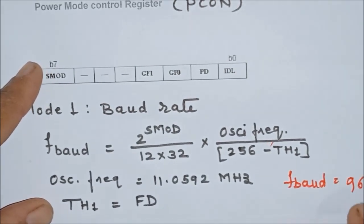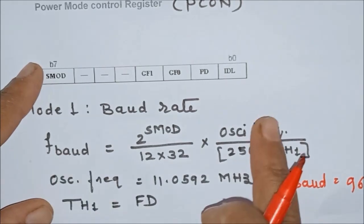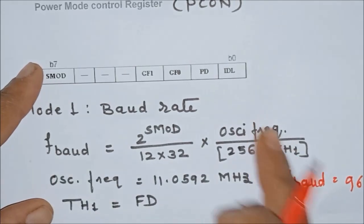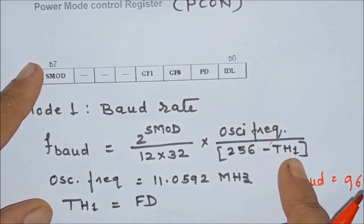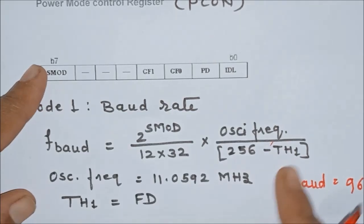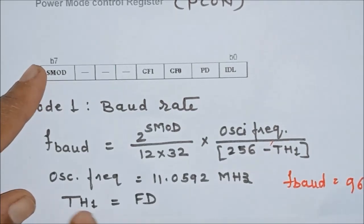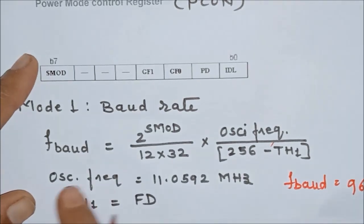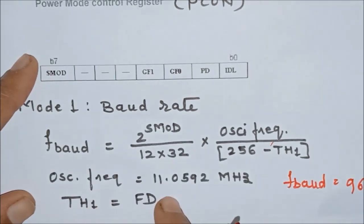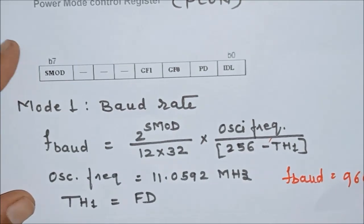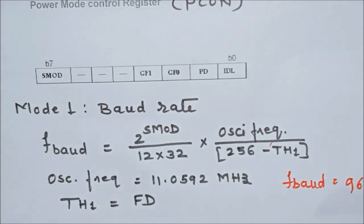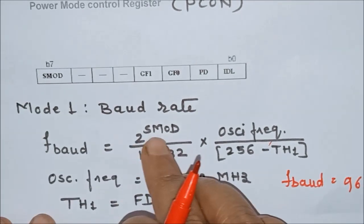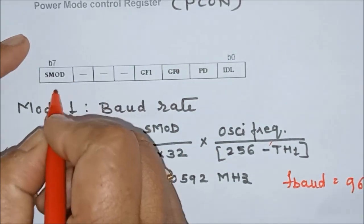By substituting the baud rate of 9600 and the oscillator frequency into the formula, we find that the count to be stored in TH1 is FDH. We are using SMOD bit as 0.